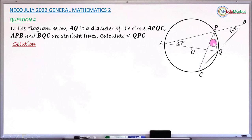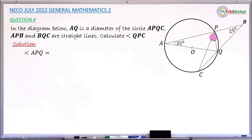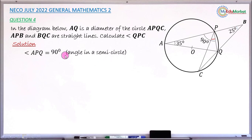Let me mark it in red — this is my target. I may not find this angle right away, but finding other angles will lead me to it. Starting with angle APQ: this is a diameter, and it subtends angle APQ at the circumference. By the theorem, the angle in a semicircle is 90°, so angle APQ equals 90 degrees.